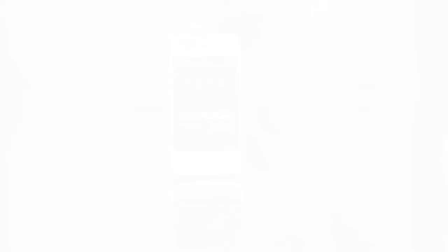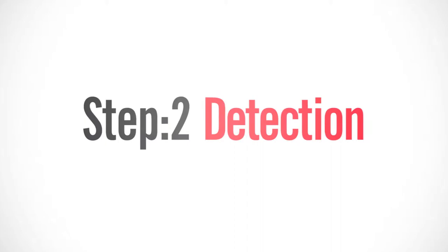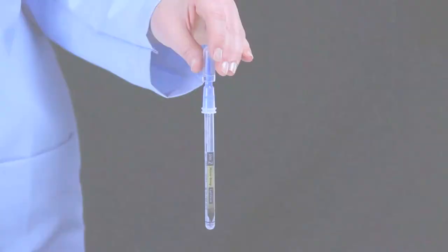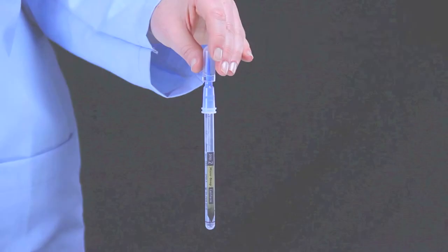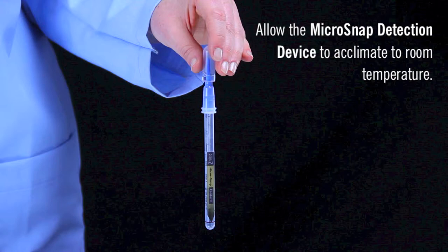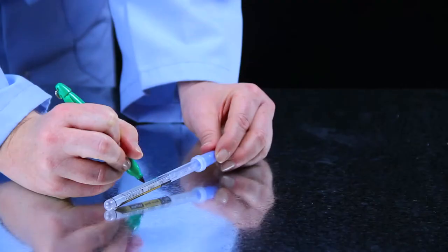The second step is detection. Allow the detection device to acclimate to room temperature before testing begins. Write the location or product on the swab tube label for easy identification.